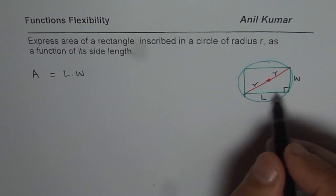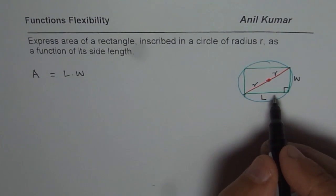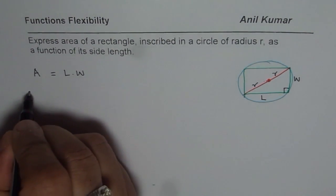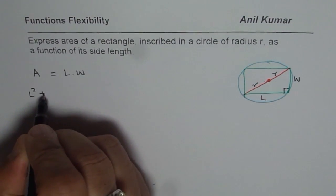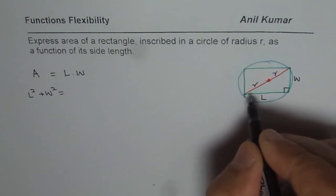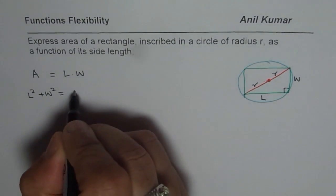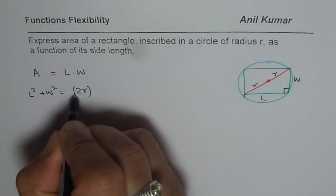So we can write this expression for relating these sides as L square plus width square equals to the diagonal is 2r. So we will write this as 2r square.